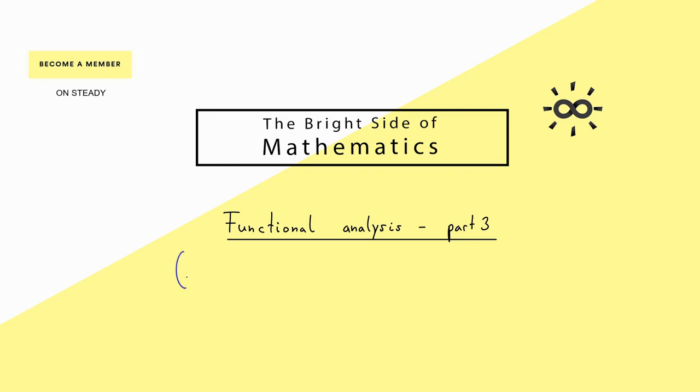Please recall a pair consisting of a set X and a metric d is called a metric space.